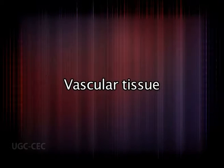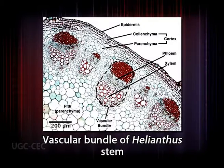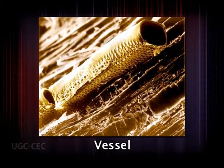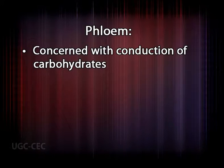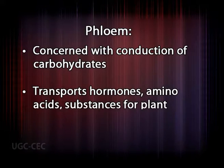Vascular tissue includes two kinds of tissues. Xylem is primarily concerned with the conduction of water and dissolved minerals. It usually contains vessels — continuous tubes formed from dead hollow cylindrical cells called vessel members arranged end to end — and tracheids, which are dead cells that taper at the ends and overlap one another. Phloem is concerned with the conduction of carbohydrates, mainly sucrose, used by plants for food, and also transports hormones, amino acids, and other substances necessary for plant growth.